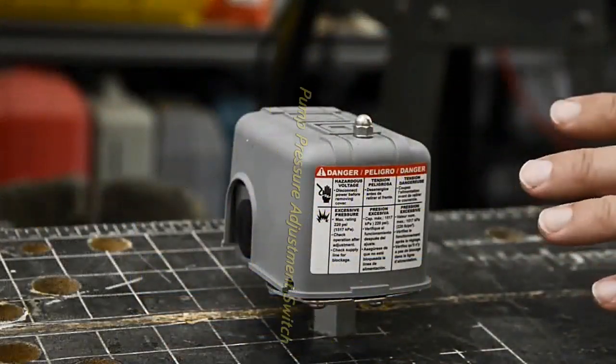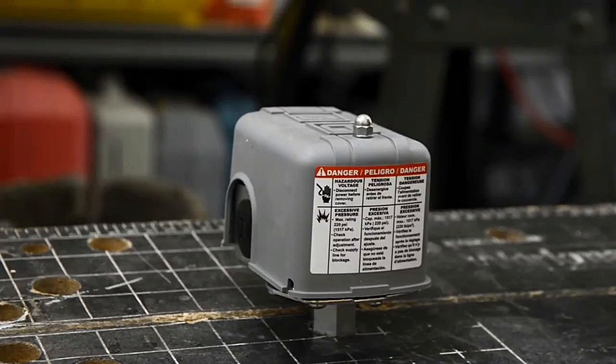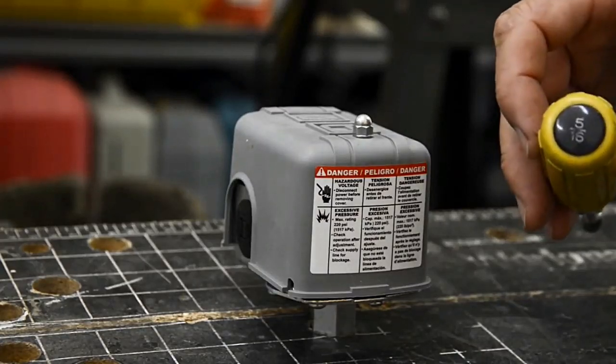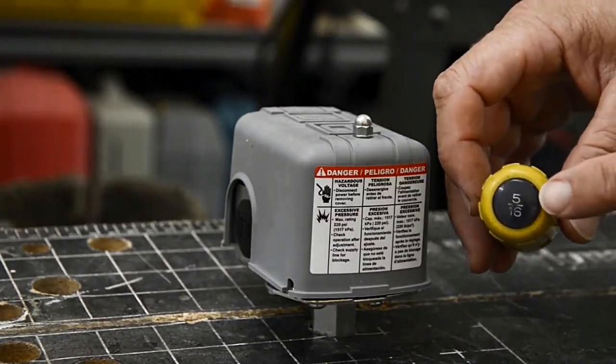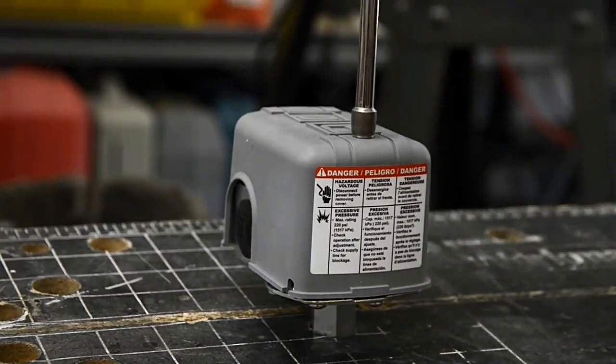We're going to adjust the Square D which is a standard pump control switch. It's also known as a pressure switch. We're going to take a 5/16ths, open up the top nut.